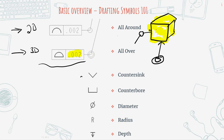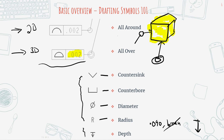The next few symbols are pretty common. If you see this in drafting notes, it means a countersink feature. This means a counterbore feature. This means you're defining a diameter. This means you're defining a radius. Finally, we have depth — if you want to tell the machinist to only drill down 0.09 inches and not break through the sheet metal, you can use a depth feature and define it with 0.09.